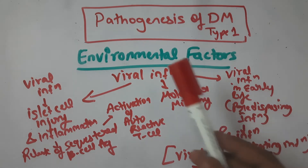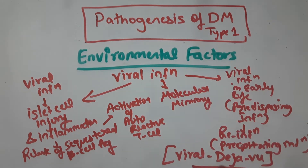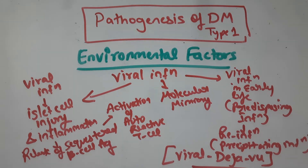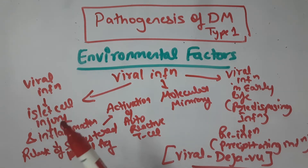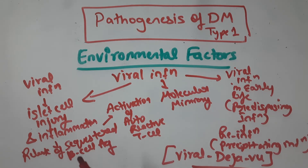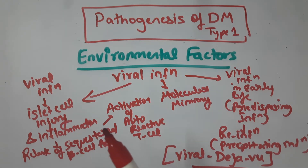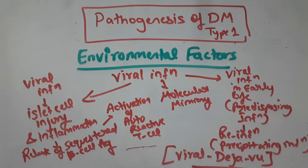Now the second factor: environmental factors, especially viral infections, are involved in triggering islet cell destruction in Type 1 diabetes mellitus. Examples include mumps, rubella, coxsackie B virus, and cytomegalovirus. The first mechanism is: viral infection causes islet cell injury and inflammation, which leads to release of sequestered beta cell antigens. These exposed antigens activate auto-reactive T cells, which then damage the beta cells.